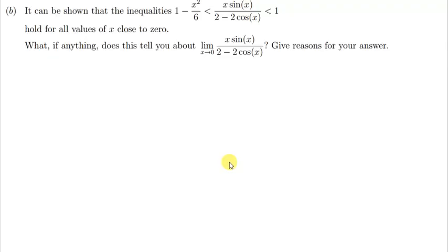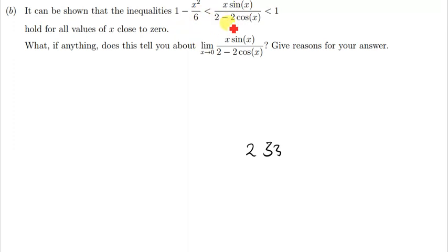The first question here is: it can be shown that the inequality 1 minus x squared over 6, less than x·sin(x) over 2 minus 2·cos(x), less than 1, holds for all values of x close to 0. In other words, it holds when we find the limit of this function when x is approaching zero.